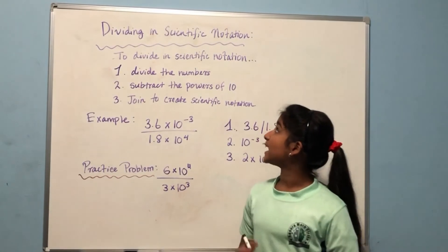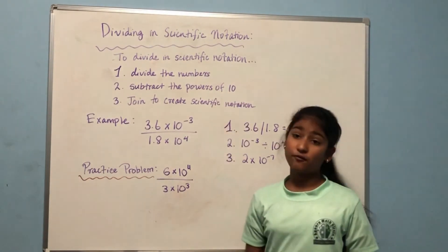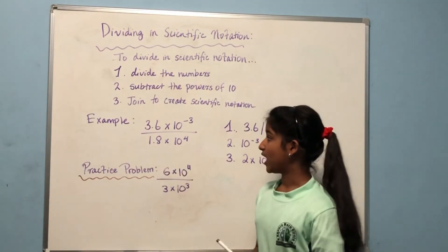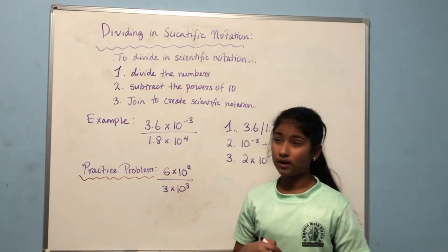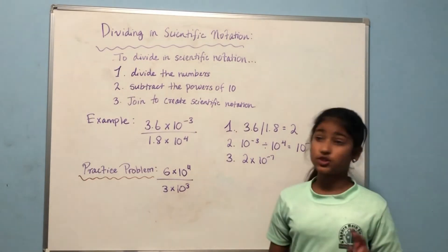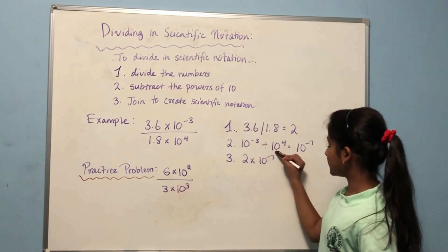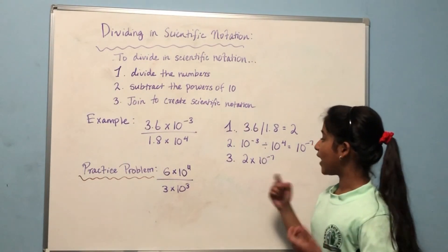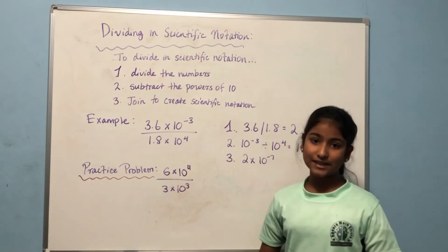Now let's learn how to divide in scientific notation. To divide, first divide the numbers, then subtract the powers of ten, and finally join the two to create the scientific notation form. For example: 3.6 times ten to the power of negative 3, divided by 1.8 times ten to the power of 4. First, 3.6 divided by 1.8 equals 2. Then, negative 3 minus 4 equals negative 7, giving ten to the power of negative 7. The answer is 2 times ten to the power of negative 7.